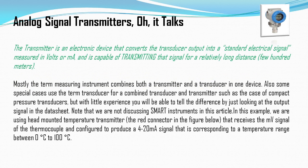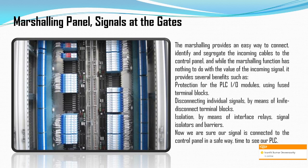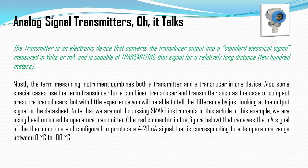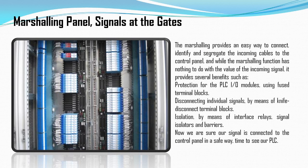To communicate with the field or any process, we need a transmitter. When signals come from the field, we also need a marshalling panel. The signals coming from transmitters are normally in 4 to 20 milliamperes or 0 to 10 volts — these are standard signals. When they reach the terminal board, fuse protection is needed before passing signals to the input module of the PLC or DCS.